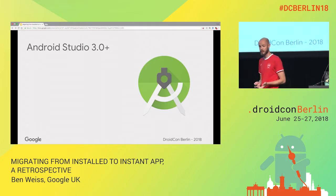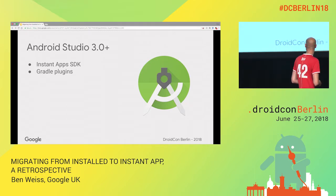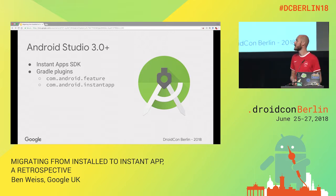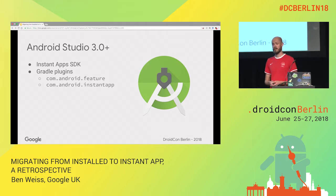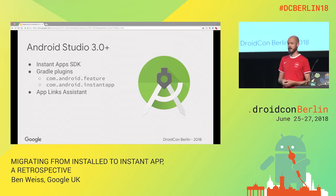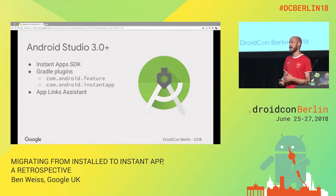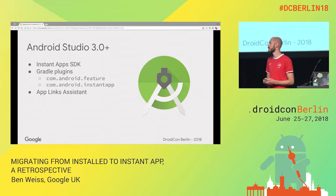Android Studio 3.0 has been out for a while. It came with all the new features we needed — the SDK, the Gradle plugins, the Instant App plugin, and the feature plugin, which are used for developing an Instant App. It also came with the App Links Assistant, which gives you an easy way to create a file you can upload to your server. The Play Store can then use that file to check whether the fingerprint matches the fingerprint of your certificate. So not anybody can claim any URL — you have to have ownership of the URL.